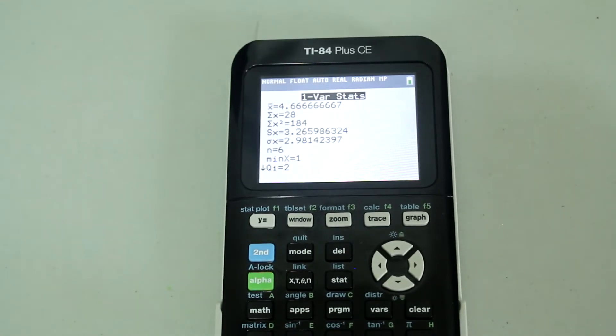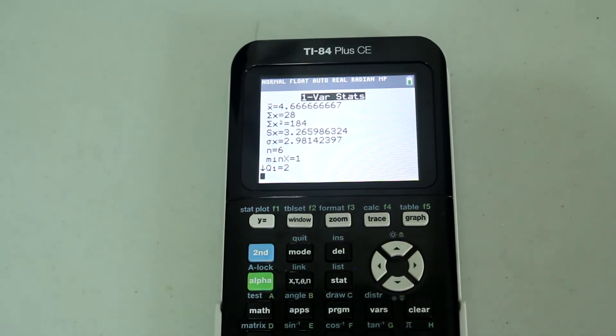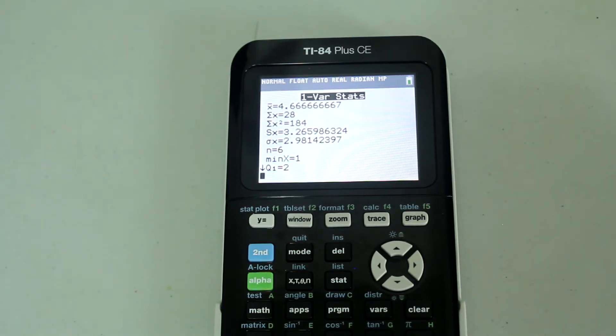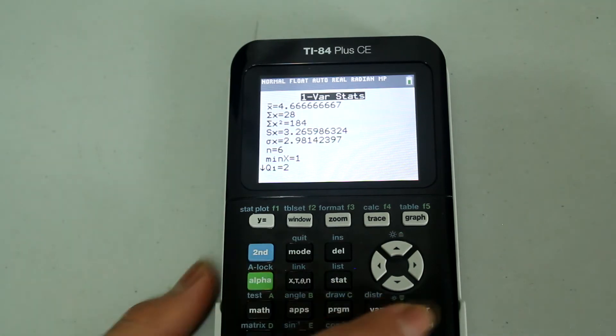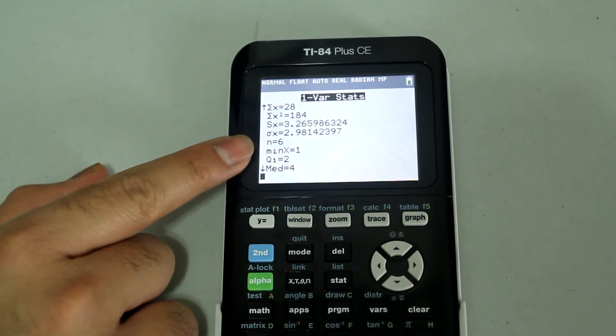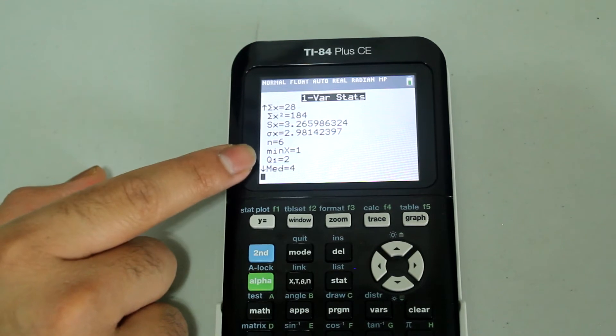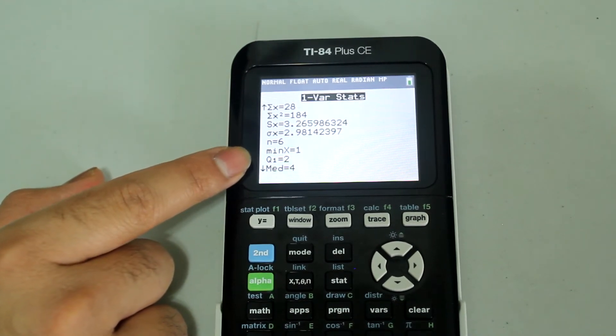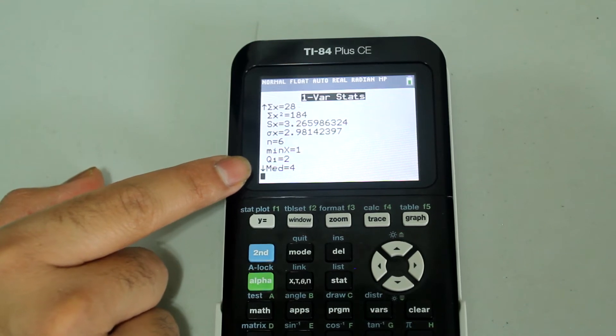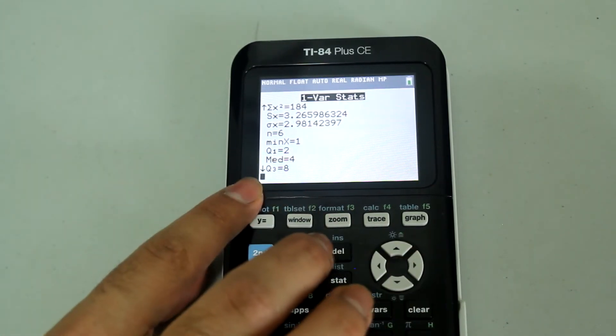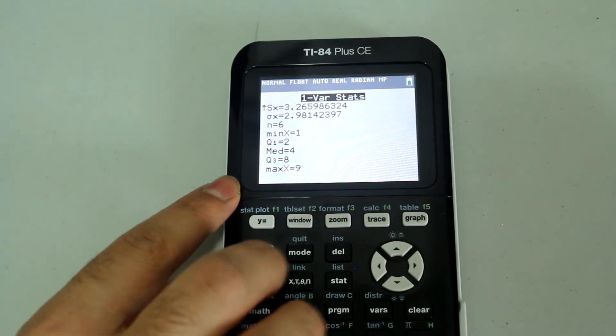And then we finally get all the statistical values that we are looking for. First we have the arithmetic mean, then we have the sum of all the data points, then we have the sum of the squares of all the data points, then we have sample standard deviation, population standard deviation, and then n is the number of data points we have, so that's 6. The minimum is 1, although we didn't type it in in order, it still identified the minimum to be 1. The lower quartile value is 2, the median is 4, the upper quartile value is 8, and the maximum finally is 9.